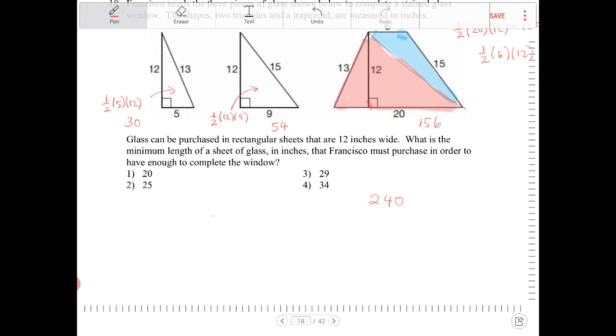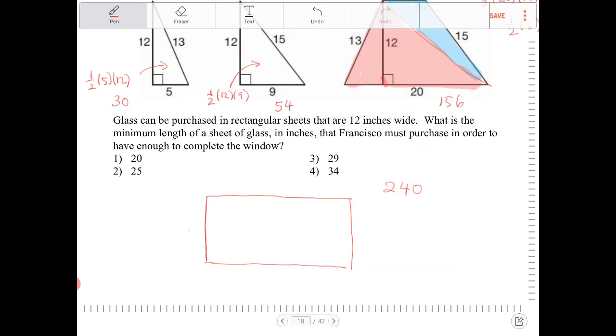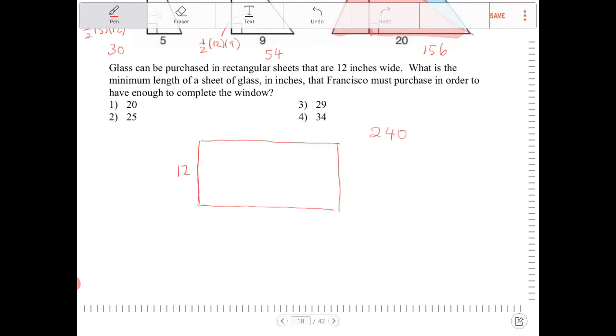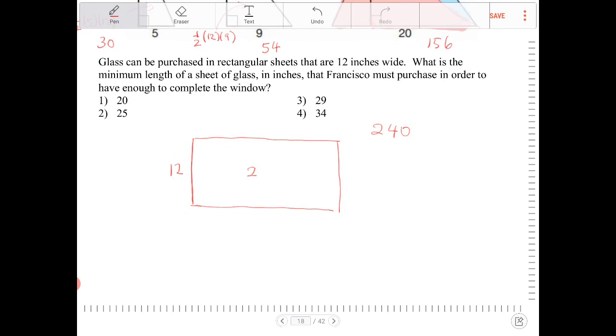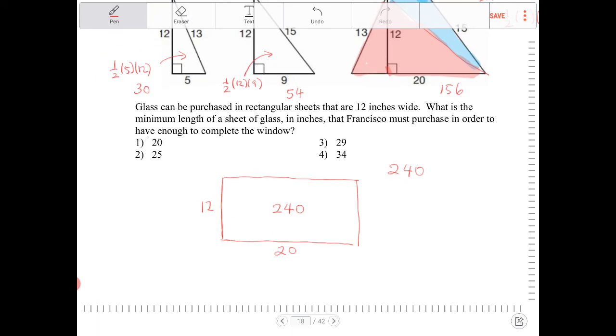Now, based on this and the way in which glass can be purchased according to this problem, we can only buy it in rectangular sheets where the height is 12 inches. So this needs to be 240, so therefore we have to buy a sheet of glass. At minimum, it has to be 20 inches long. So that would be option one.